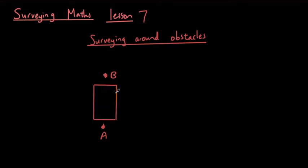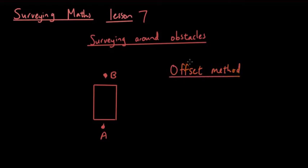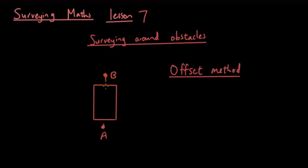The first method I'm going to show you is called the offset method. If you guys remember what the word offset means from the field book lesson, an offset is basically a line that is perpendicular to the survey line. So A to B is my survey line, and if I draw an offset to the survey line it will be at right angles to the survey line.